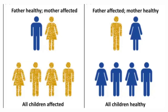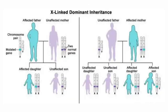In mitochondrial inheritance, an affected mother transmits disease to all her children, while an affected father transmits to none — confirming mitochondrial pattern. For X-linked dominant traits, an affected father transmits disease to all his daughters but none of his sons. If the mother is affected and the father is normal, she transmits to 50% of both sons and daughters.